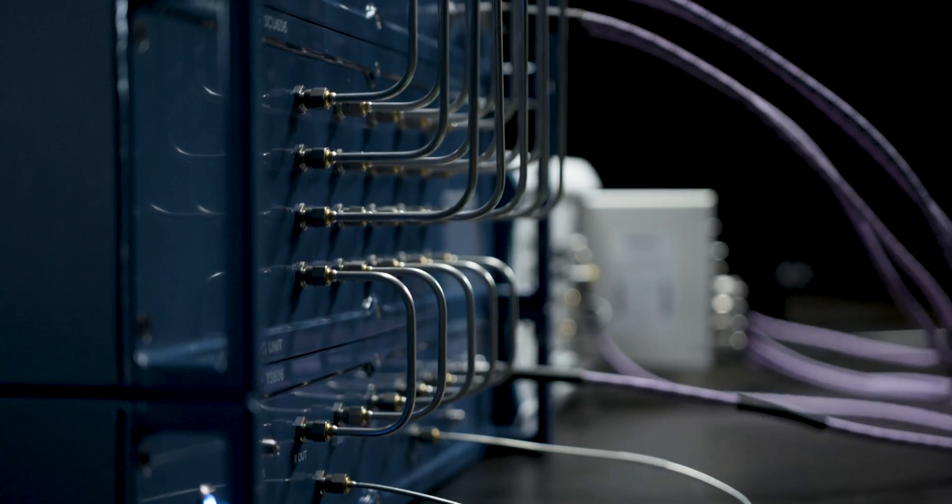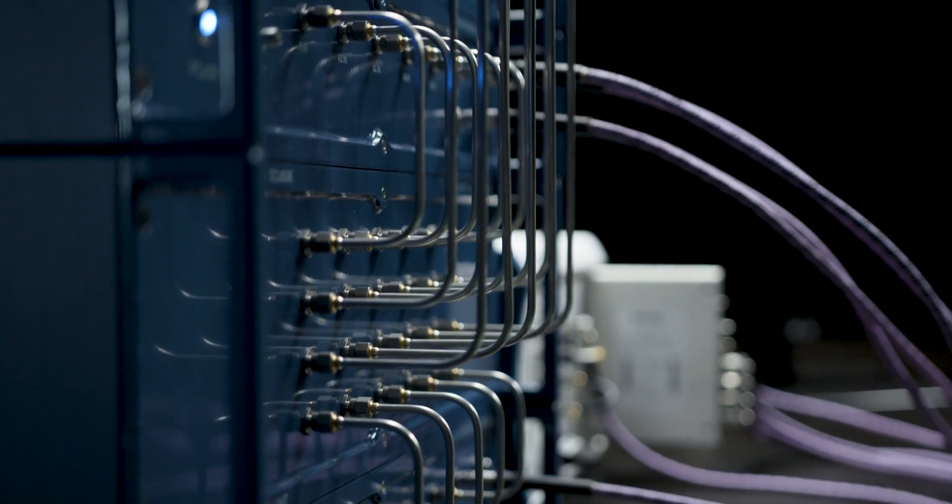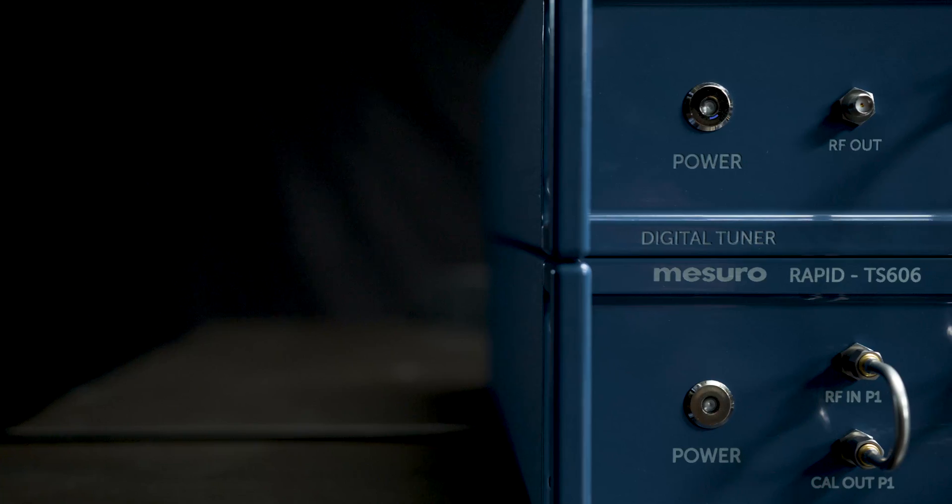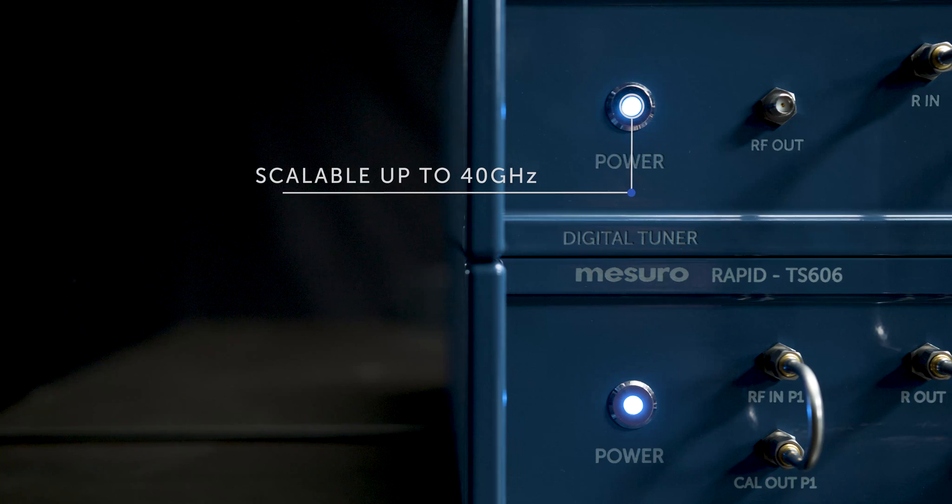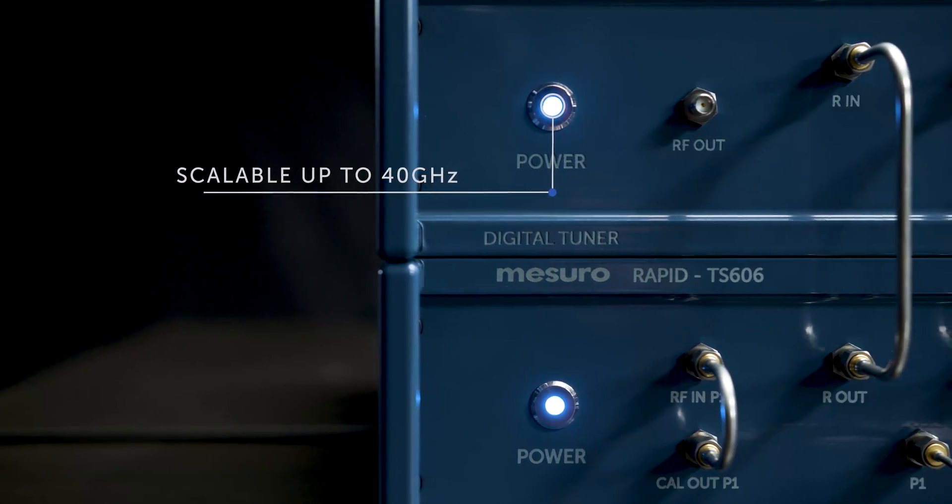Rapid's modular architecture was designed for scalability, with a standard 6 GHz configuration extendable up to 40 GHz by adding additional modules, with the option of adding future functionality.